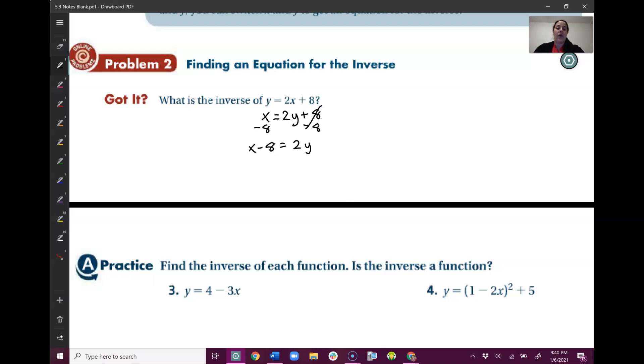So now I have x minus 8 on this side and 2y left on that side. So I need to solve for y. All that's left is that 2. It's being multiplied to the y. You know that because they're right next to each other. Anytime things are right next to each other, they're being multiplied. So to get rid of it, I'm going to divide. So now I have y equals all by itself like I wanted. x minus 8 divided by 2. And that is our inverse equation. That's it.